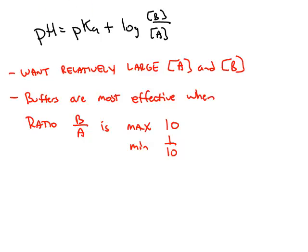Just because you make a buffer out of, let's say, a weak acid and its conjugate base—hydrofluoric acid is a weak acid, and its conjugate base is fluoride.